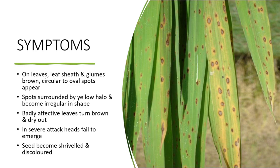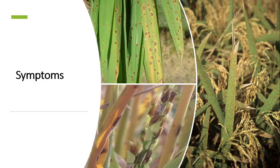Under severe conditions, the panicle has failed to emerge. The seeds are shriveled or discolored. Here you can see the seeds affected by the disease. You can also see highly infested fields of rice.